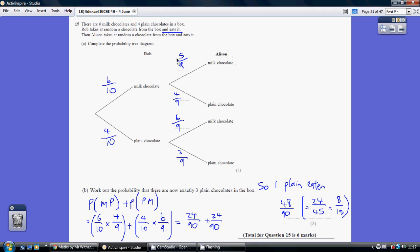So that's why her choice is 5 out of 9. Now, given that Rob has had a milk chocolate sweet, that has no impact on the plain chocolate sweets. So there's still 4 of those when Alison takes her pick. So that's why that's 4 out of 9.